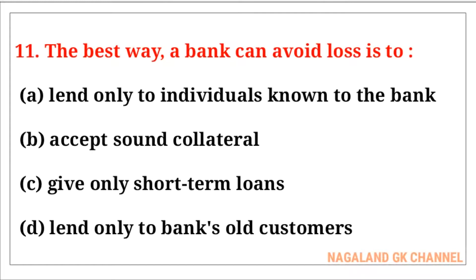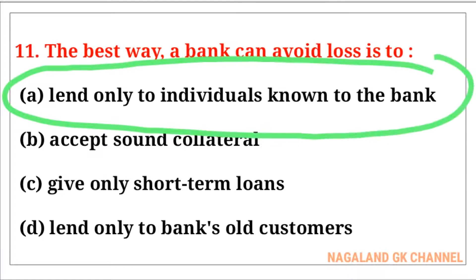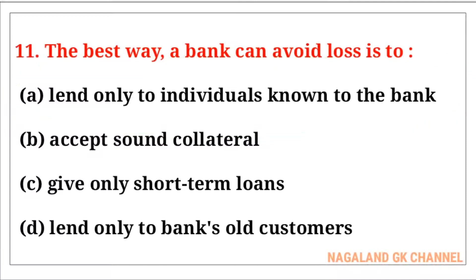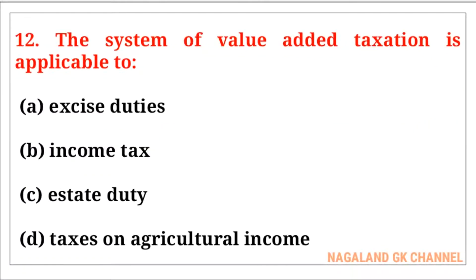Question number eleven: The best way a bank can avoid loss is — the correct answer is option number A, that is to lend only to individuals known to the bank. Question number twelve: The system of value added taxation is applicable to — the correct answer is option number A, that is excise duties.